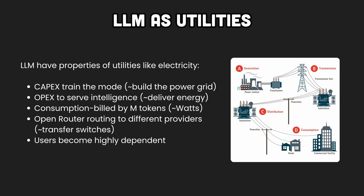LLM users expect low latency, high uptime, and consistent quality — just like you expect consistent voltage and no service interruption for electricity. There are routers, like OpenRouter, that route your requests to different LLMs based on predefined rules. You can see them as transfer switches linking the grid, solar, battery, and generators together.